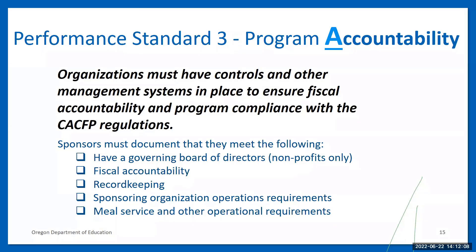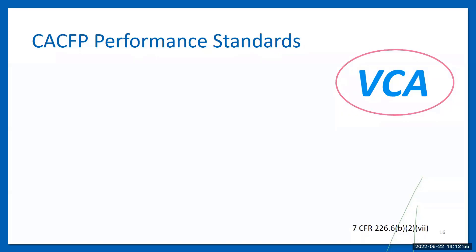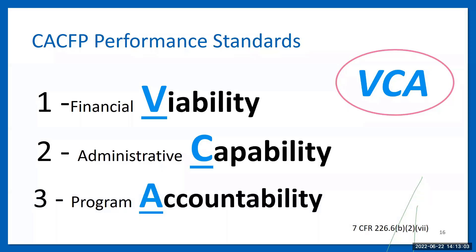The final performance standard of VCA is program accountability. As a means of ensuring fiscal accountability and program compliance, an organization must have controls and management systems in place. Sponsors will need to maintain documentation showing that nonprofit organizations not school districts are governed by an independent board of directors, that there is fiscal accountability, that records are maintained in all required CACFP areas, that operational requirements such as training and monitoring are being met, and that meal pattern, meal service, claims, and other operational requirements are in compliance. An easy way to remember: VCA — Performance Standard 1: Financial Viability, Performance Standard 2: Administrative Capability, Performance Standard 3: Program Accountability.